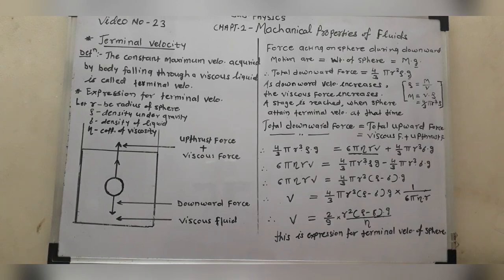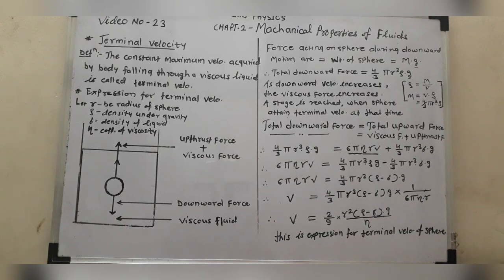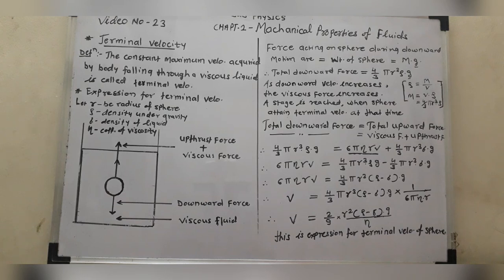We have to find out the terminal velocity: v = (2/9) r² (ρ − σ) g / η. This is the expression we have to derive. Terminal velocity is the constant maximum velocity which is acquired by a body falling through a viscous liquid.